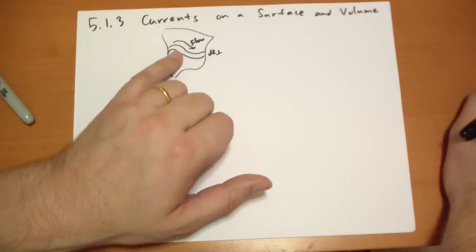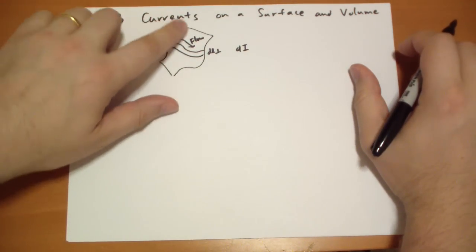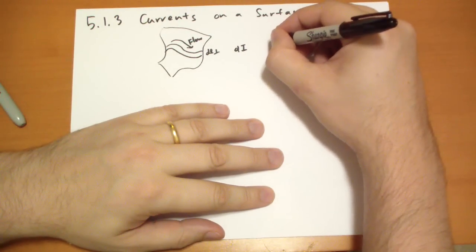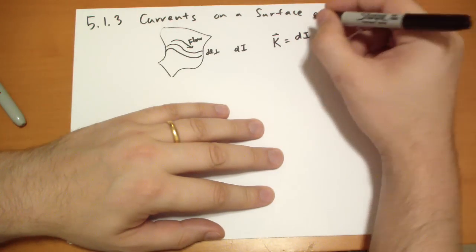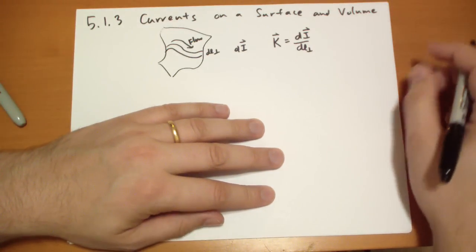So if the current flowing across this ribbon is DI, so it's part of the total surface current, it's just a small infinitesimal slice, then our K vector, the surface current, is just given by DI over the perpendicular vector.